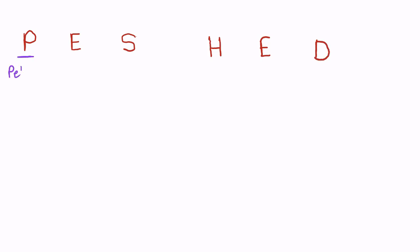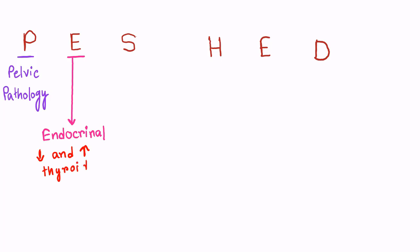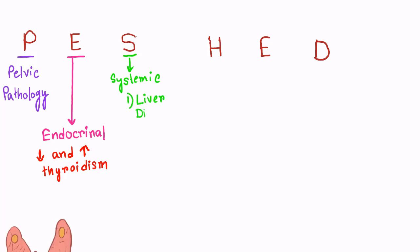Here is a mnemonic to remember the organic causes of Menorrhagia easily: P-SHED. P is for pelvic pathology, which will be discussed shortly, and E is for endocrinal causes — that is hypo- and hyperthyroidism.